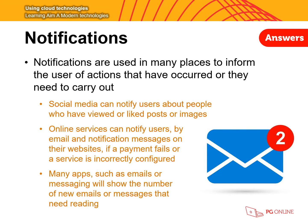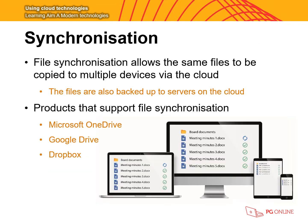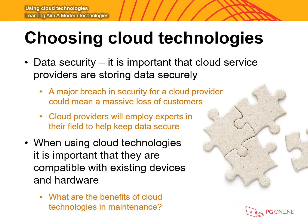Many apps such as WhatsApp and instant messenger send notifications when you receive a new message from a contact. Let's look at synchronization. When you create a picture or file on one of your devices, file synchronization allows the same file to be copied to multiple devices via the cloud. These files are also backed up on cloud servers, so if you lose the original you can restore the backup. Main products supporting file synchronization include Microsoft OneDrive, Google Drive, and Dropbox. For example, a file from your phone may automatically sync to your tablet, PC, and laptop.